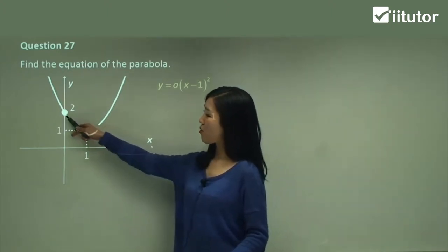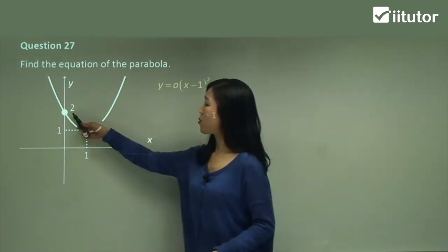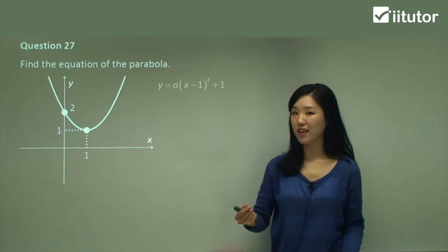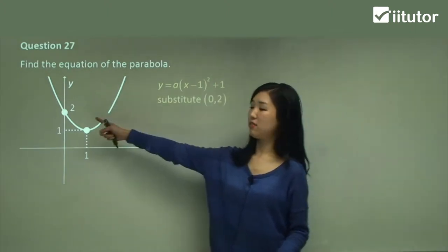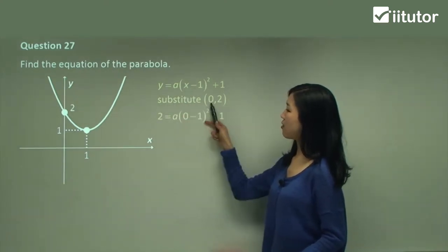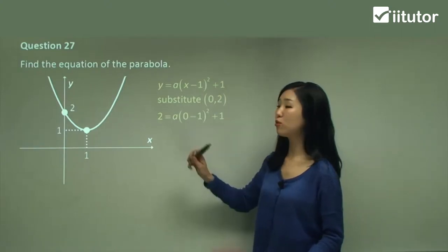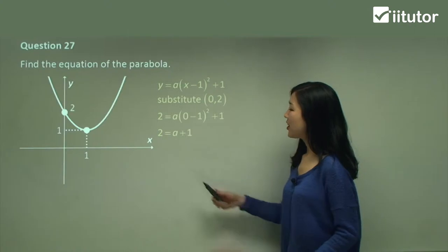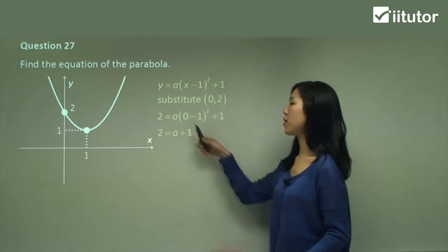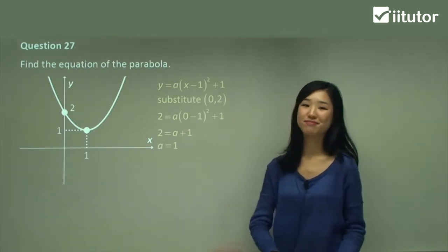They actually give us a coordinate of the y-intercept, which is 2. The y-intercept is part of the graph, so this coordinate, which is (0, 2), we can substitute it into this equation and we will be able to find a. So I'm going to substitute (0, 2) into the equation. So y is 2, so 2 equals a times 0 minus 1 squared plus 1. Here the only pronumeral is a, so we can solve it. 0 minus 1 is negative 1, negative 1 squared is positive 1, times a is just a, and then adding 1. Move 1 over to the other side — a is just 1.